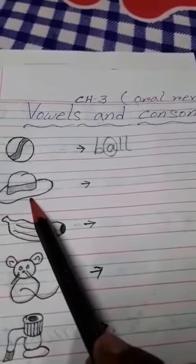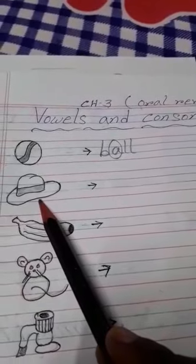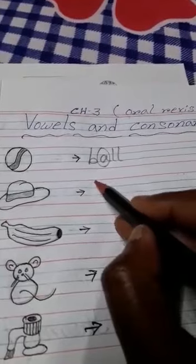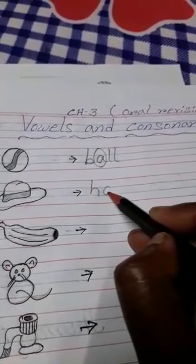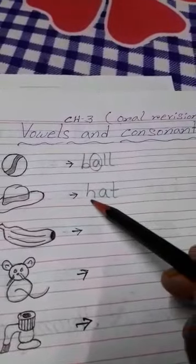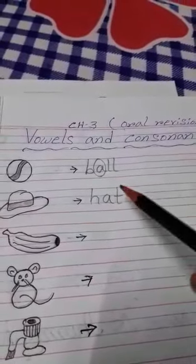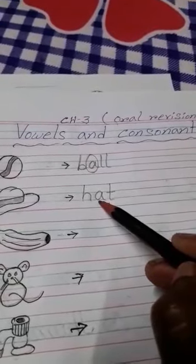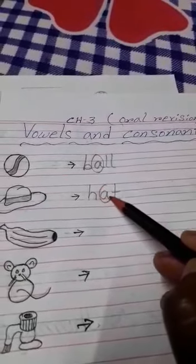What is this? This is a hat. Now, tell me the spelling of hat. H-A-T. Hat. Now, in this word, which is vowel? A is a vowel. And you have to circle it.